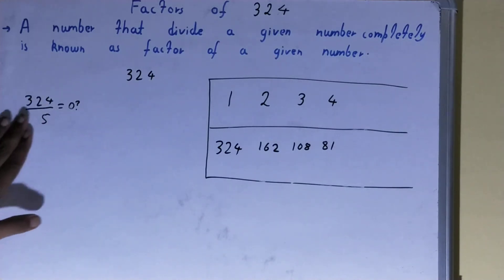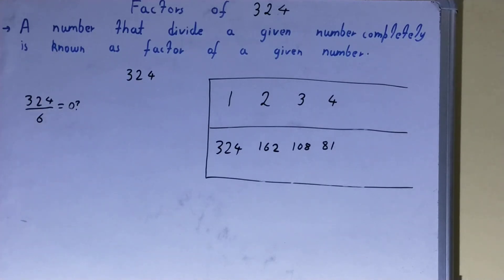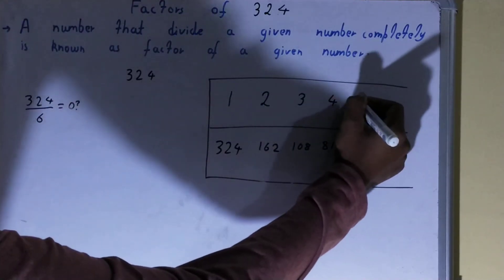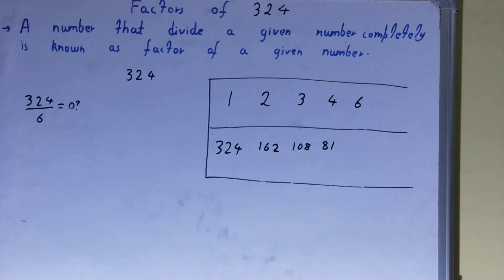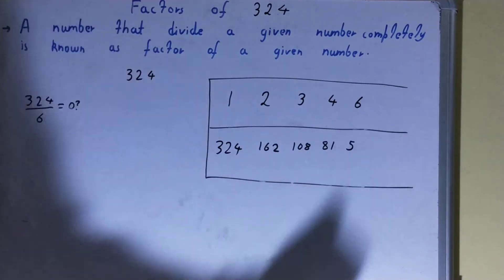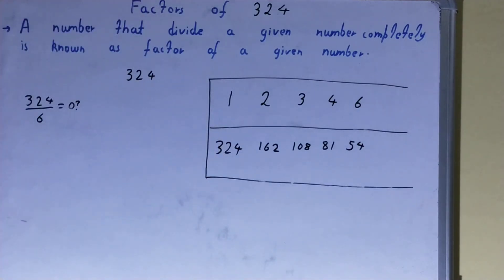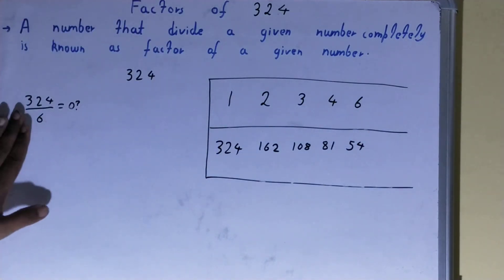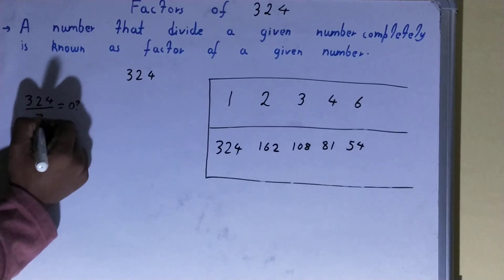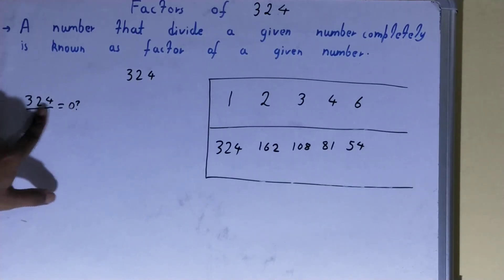After 4, we check with 5. The last digit is neither 0 nor 5, so 5 is not a factor. We check 6: 6 × 54 = 324, so 6 is a factor and 54 will also be a factor.